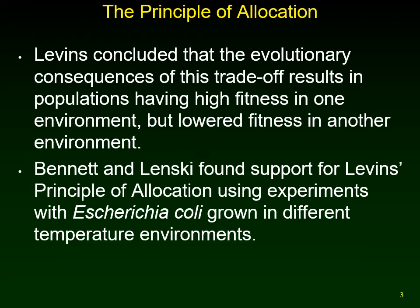The textbook describes testing the principle of allocation as a hypothesis, looking at work done by Albert Bennett and Richard Lenski using a microbial population. A nice thing about bacteria is they grow very quickly with a very short generation time, which makes them ideal for studying evolutionary changes. You can manipulate the environment and temperature and observe trade-offs in reproduction rate. With bacteria, you can go through hundreds of generations in a week. This research used E. coli, which lives in the human body at body temperature.